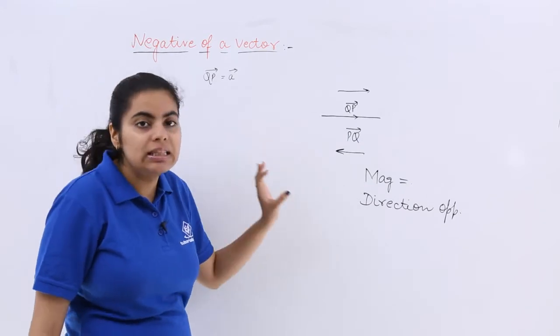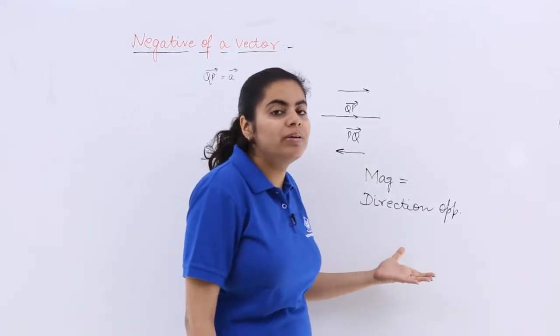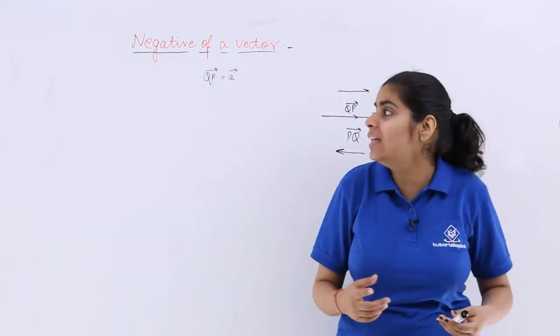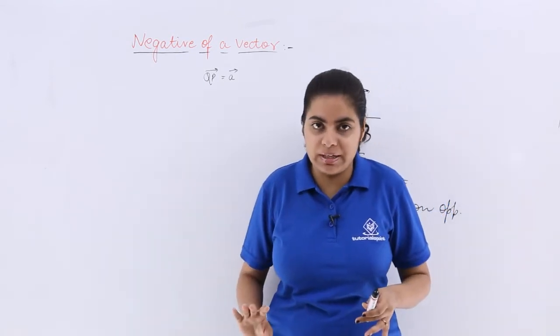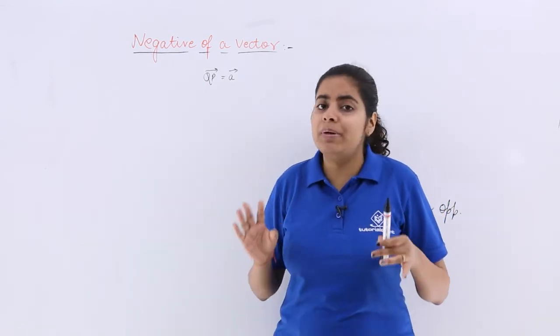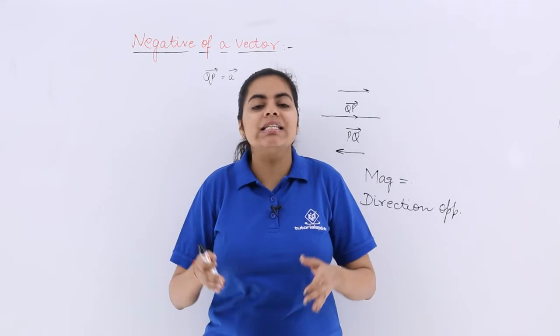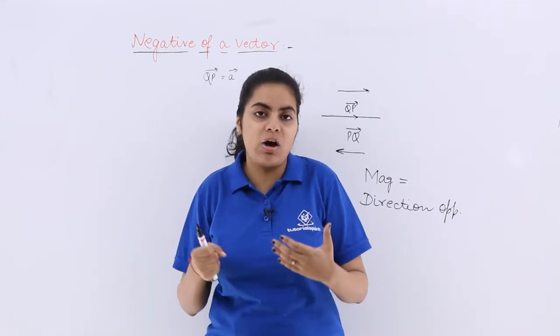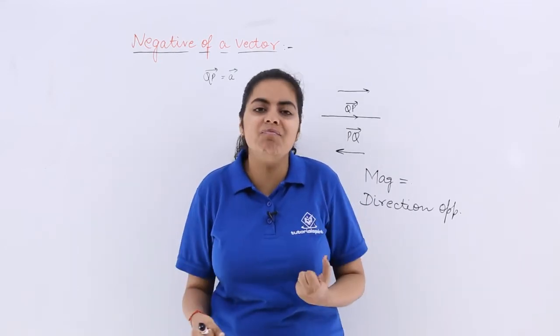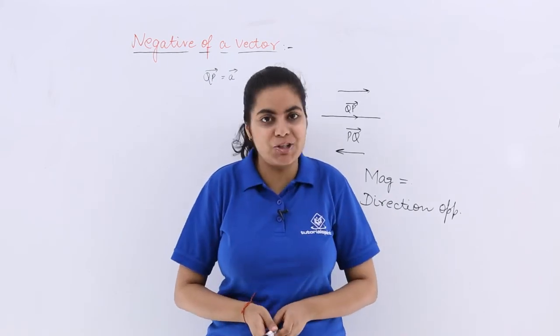That is the thinking about this QP vector, PQ vector, or the negative of a vector. I repeat again, negative of a particular vector is the vector having the same magnitude but the opposite direction.